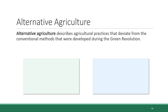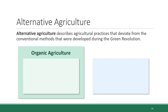Alternative agriculture describes agricultural practices that deviate from the conventional methods that were developed during the Green Revolution. There are two main schools of alternative agriculture: organic agriculture and conservation agriculture.